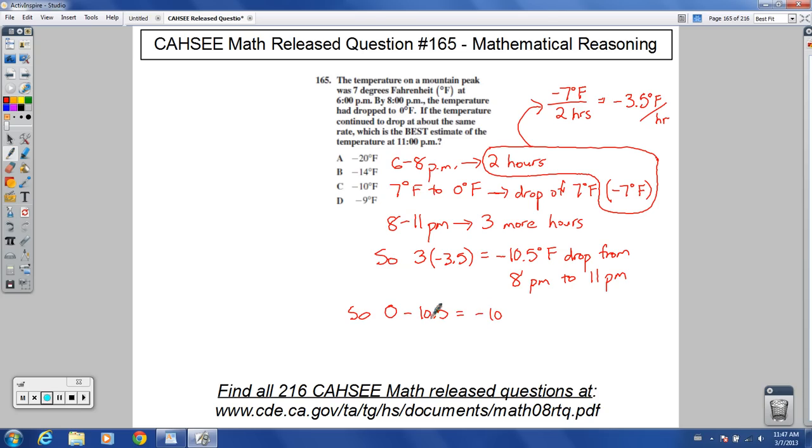If this wasn't 0, we'd have something else instead of just the same number, but it is 0, so we have negative 10.5 degrees Fahrenheit at 11 p.m.